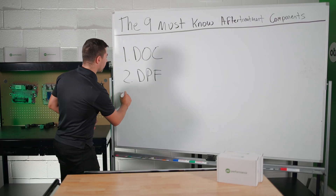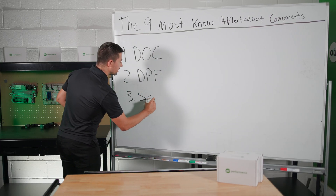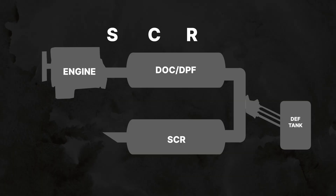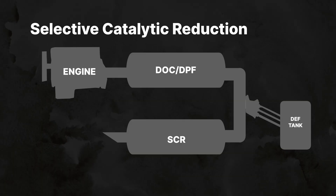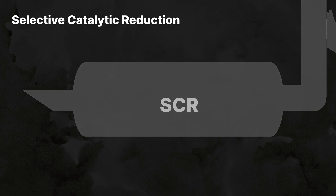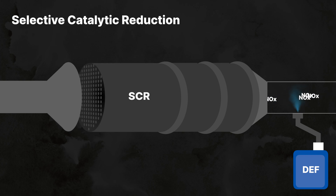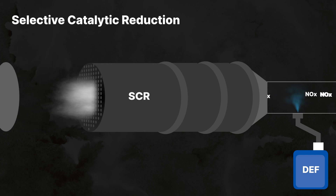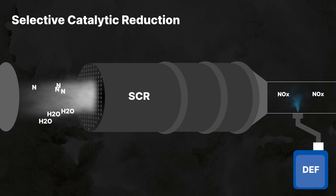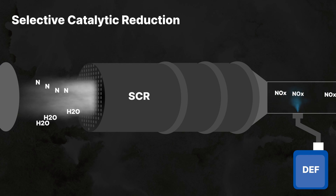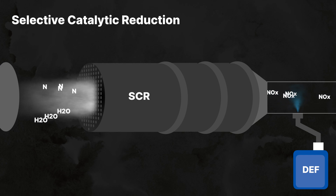The third after-treatment component is called the SCR, which stands for Selective Catalyst Reduction. This system reduces nitrogen oxide NOx emissions by injecting diesel exhaust fluid into the exhaust stream. The chemical reaction converts NOx into nitrogen and water vapor. The SCR catalyst is located right after the DPF filter and completes the entire after-treatment system.